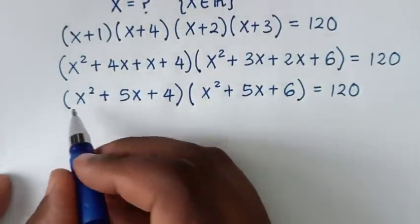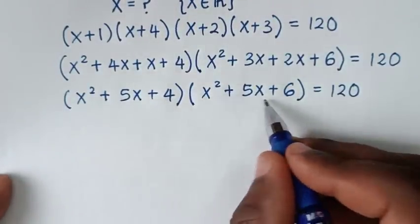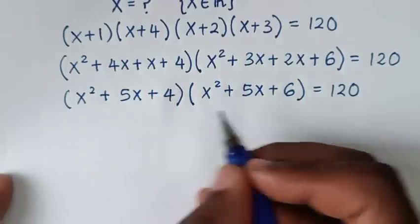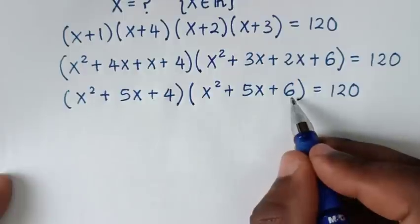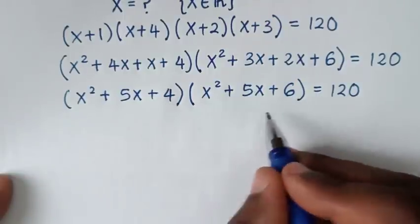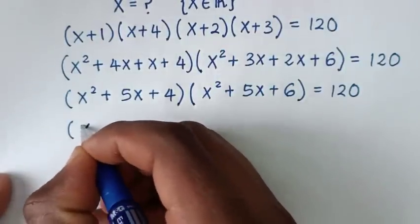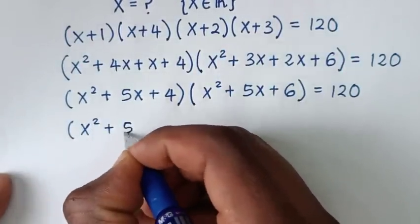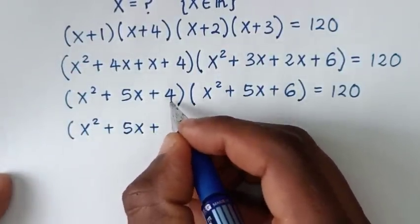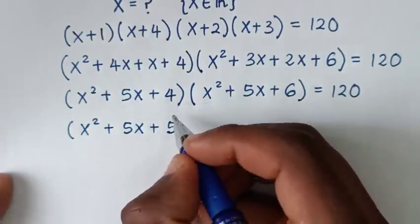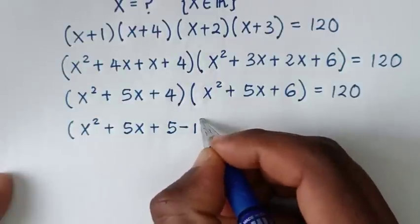Then from here: (x² + 5x)(x² + 5x). Here we have 4 and here 6. Between 4 and 6 it is 5, so we'll make 5 common. Our equation will be (x² + 5x + 4), and 4 is the same as 5 minus 1. We'll make 5 common, so 4 is the same as 5 minus 1.